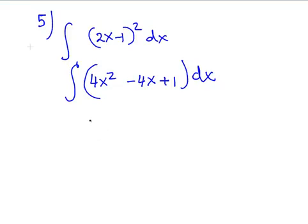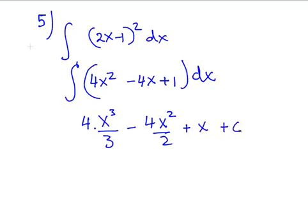So, the answer is, for the first term, is 4 times x³, 2 plus 1 is 3, over 3. Minus 4x² over 2, plus x, plus c. 4 divided by 2, we could just divide that down and have it as minus 2x².